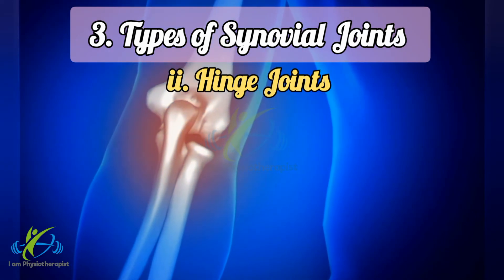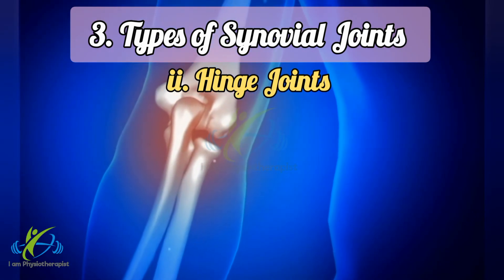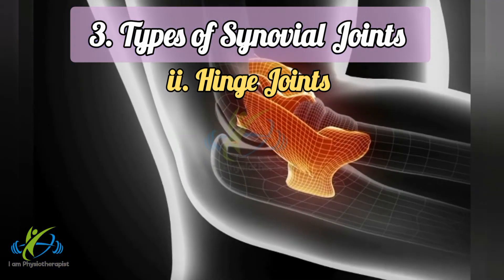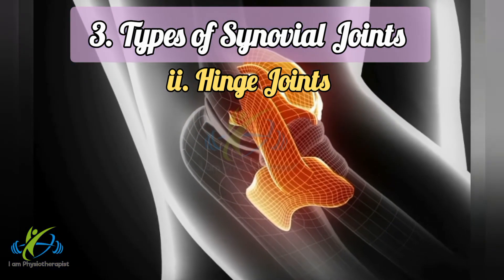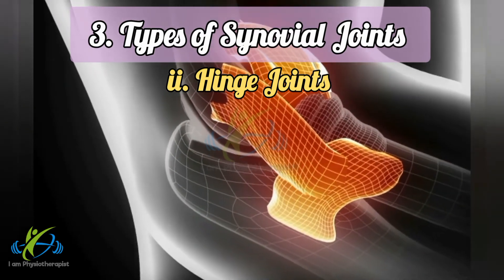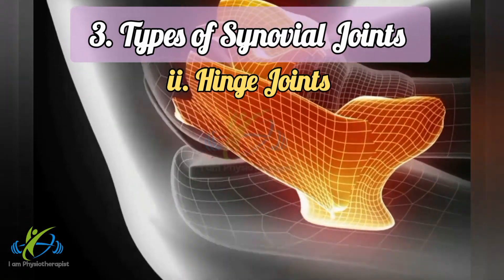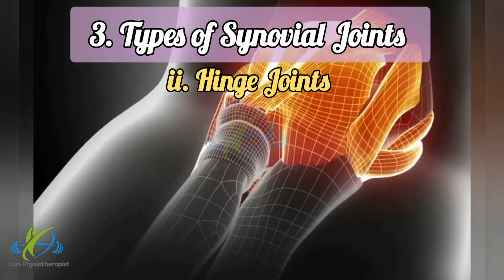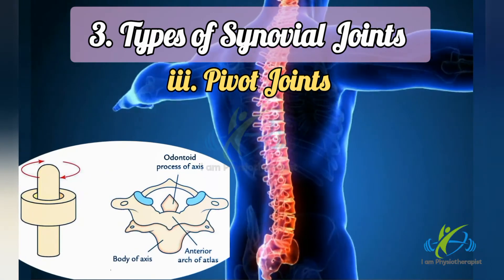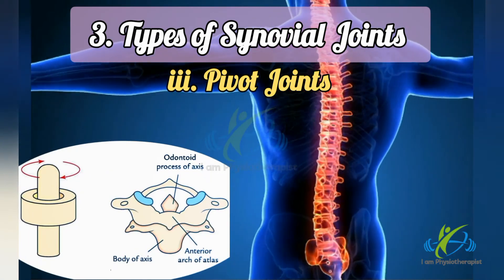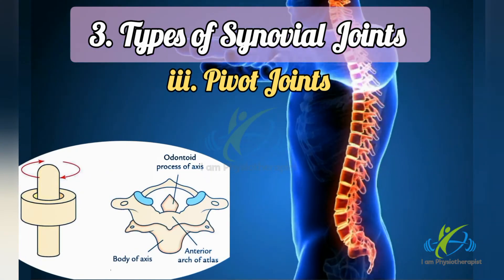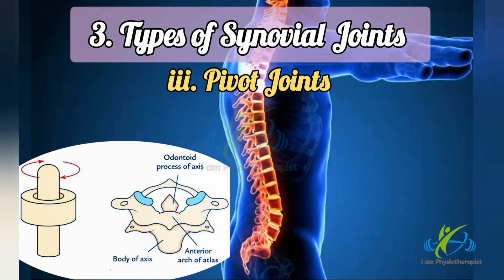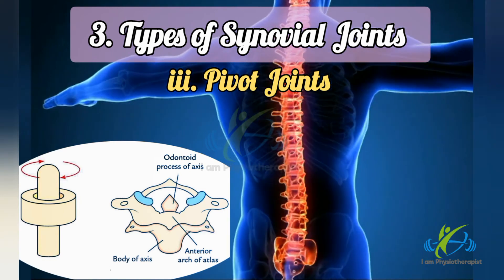Hinge joints: articular surfaces are pulley-shaped with strong collateral ligaments, and movements are permitted in one plane only. Examples include elbow joint, ankle joint, and interphalangeal joints. Pivot joints: movements are permitted in one plane around a vertical axis. Examples include superior and inferior radio-ulnar joints, median joints, and median atlantoaxial joint.